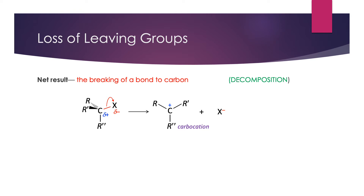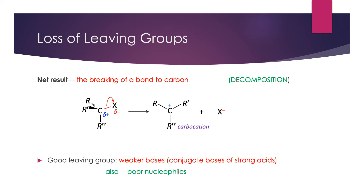Good leaving groups tend to be weaker bases — you would think of them as the conjugate bases of strong acids. For example, X could be a chlorine atom, and X-minus would be a chloride ion. Anything that is a poor nucleophile can also be a good leaving group. A full course in organic chemistry would teach you the vast array of good leaving groups, but knowing that they tend to be the conjugate bases of strong acids will help you identify them.